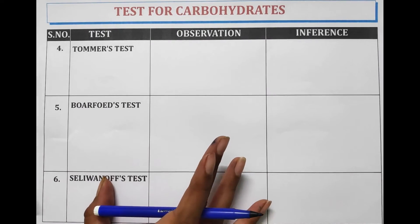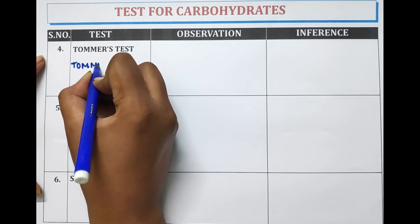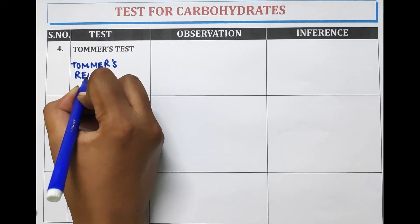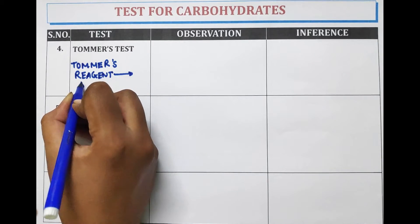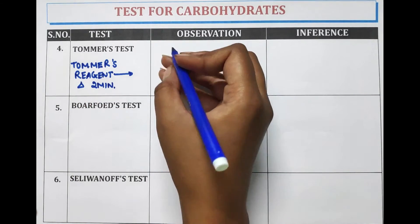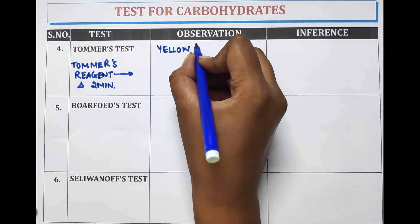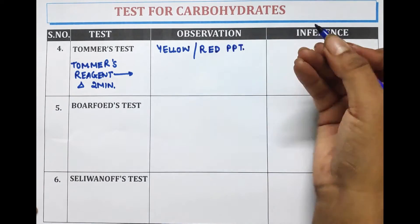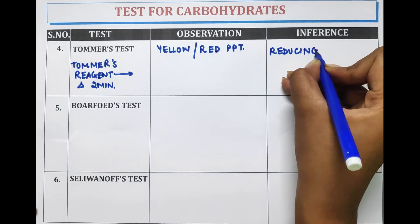The fourth test is Tollens' test. In this, Tollens' reagent is used and boiled for two minutes. The observation is that a yellow or red color precipitate is formed. Tollens' test is also a test for reducing sugars.